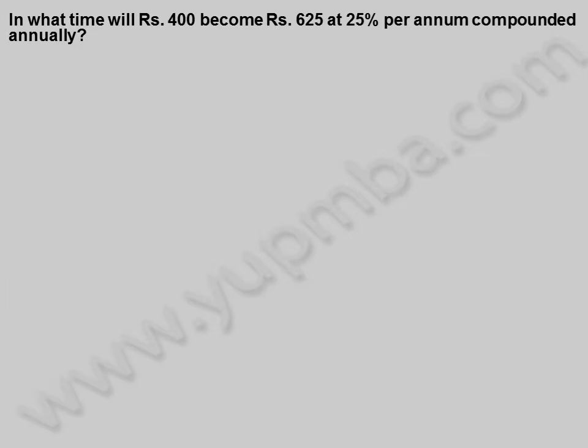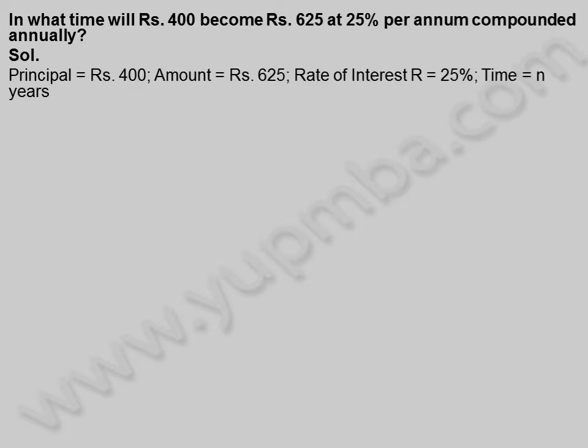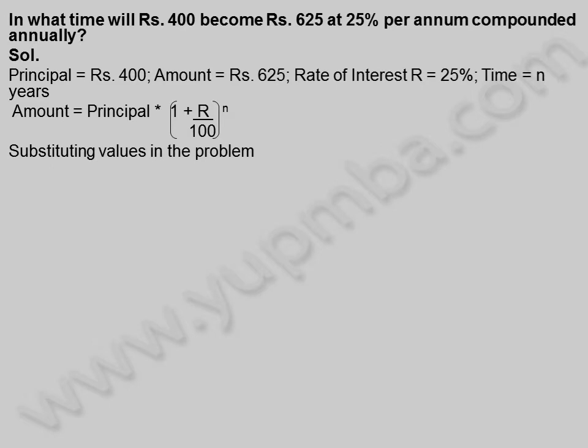In what time will 400 rupees become 625 rupees at 25% per annum compounded annually? Solution: Principle is equal to 400 rupees, amount is equal to 625 rupees, rate of interest r is equal to 25%, time is equal to n years. Amount is equal to Principle into 1 plus rate by 100, whole power n.